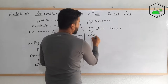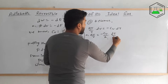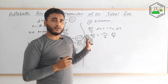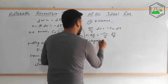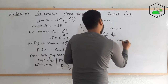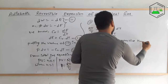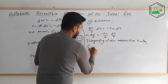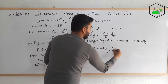Rearranging, we get dV/V = −(Cv/R) dT/T. Now let us integrate this within the respective limits — the left side from V1 to V2, and the right side from T1 to T2.